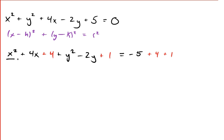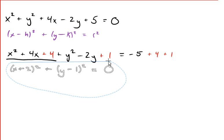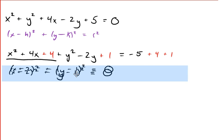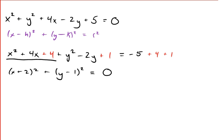And we continue. This perfect square trinomial becomes (x + 2)². So far, so good. This becomes (y - 1)². And on the right side, -5 + 4 + 1 is just 0. So what do we know about this circle now? Apparently, the center of this circle is at (-2, 1). And the radius of this circle appears to be 0.